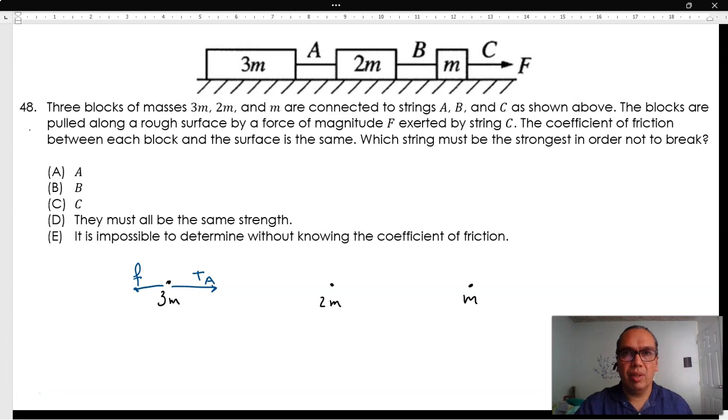The second block experiences three forces: tension B to the right, friction to the left, and tension A to the left. It stands to reason that tension B must be greater than tension A.